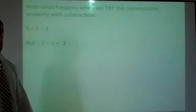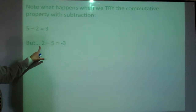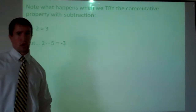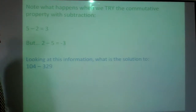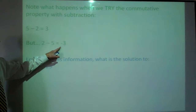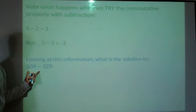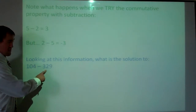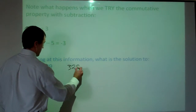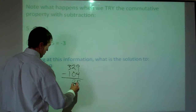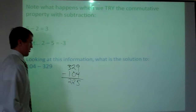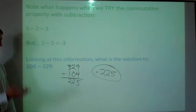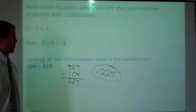When we tried the commutative property with subtraction, we found five minus two gives three, but two minus five gives negative three. Notice that five minus two is three and two minus five also gives a three, just with a negative in front. So for something like 104 minus 329, we know we'll get a negative answer. We can instead compute 329 minus 104, which gives 225, and then apply the negative — so the answer is negative 225.